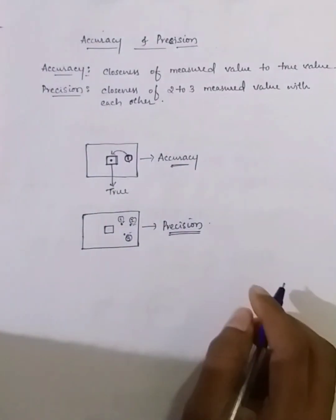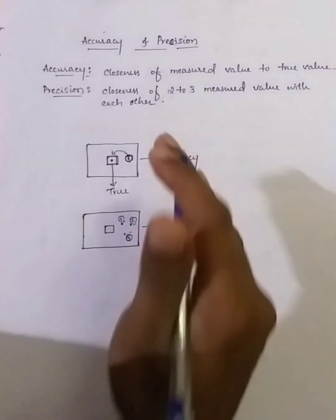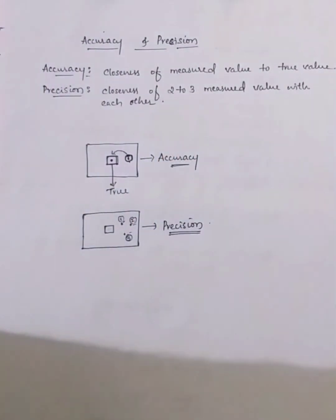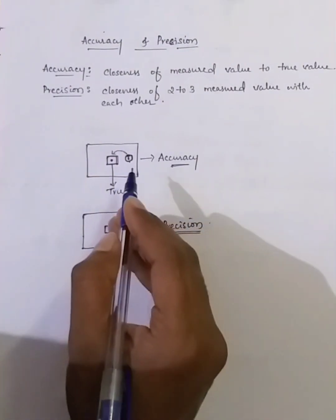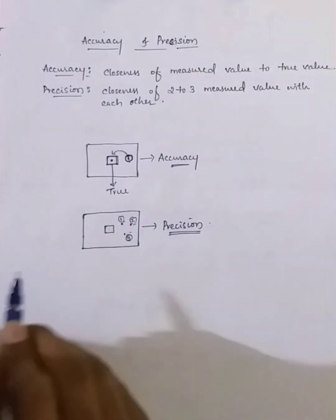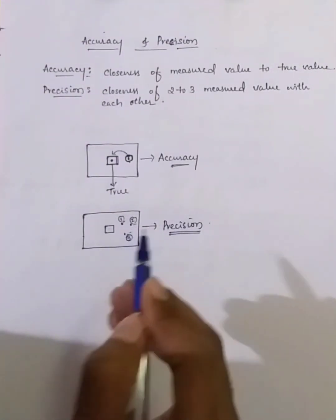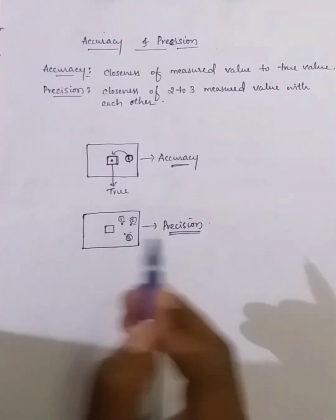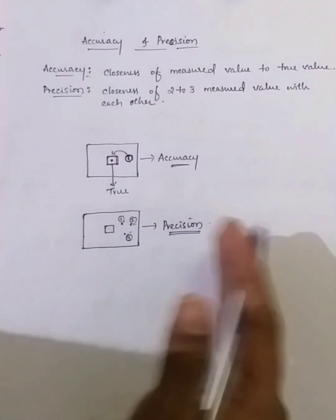This is the difference between accuracy and precision: in accuracy, you compare the measured value with the true value, but in precision, you compare the measured values with each other.